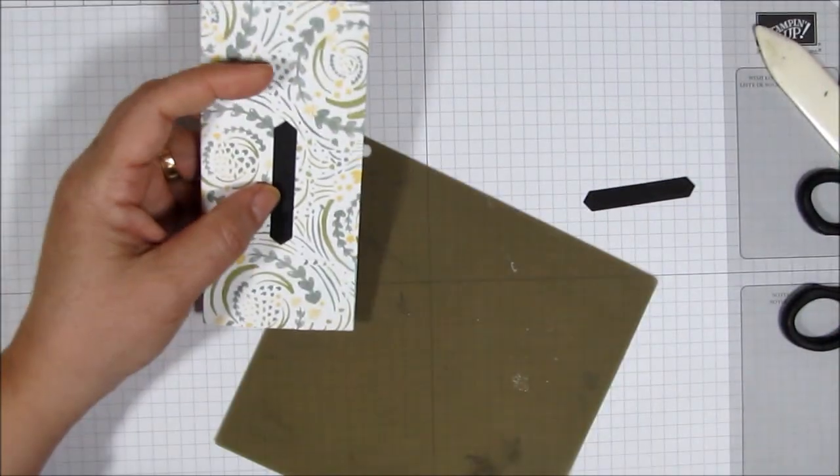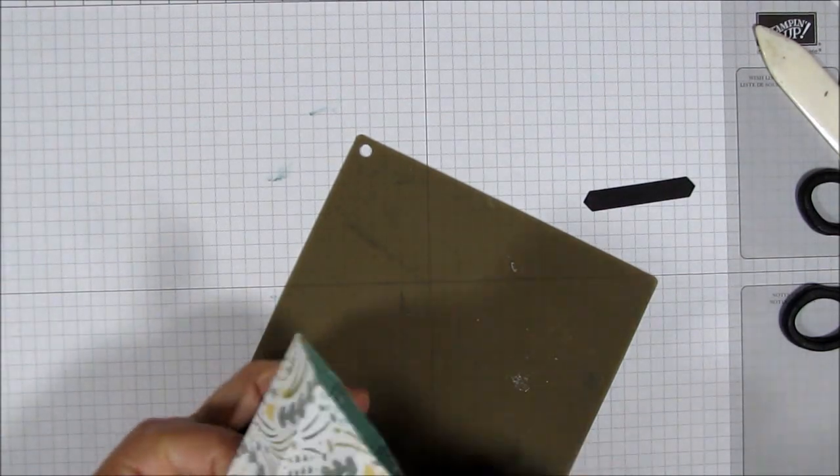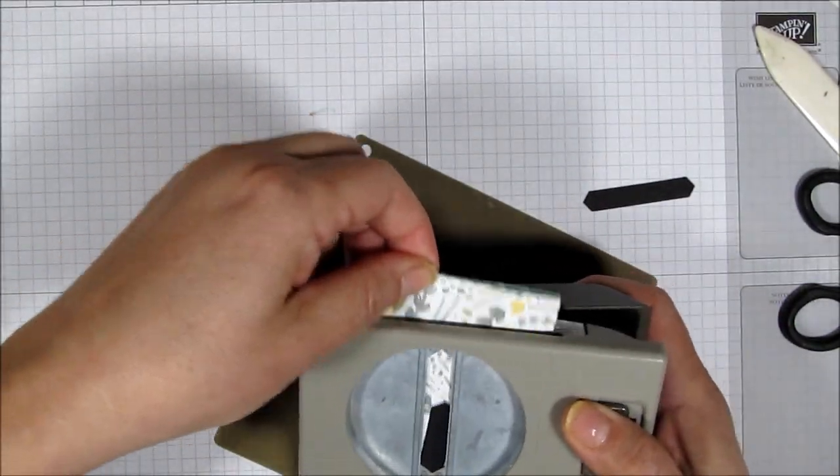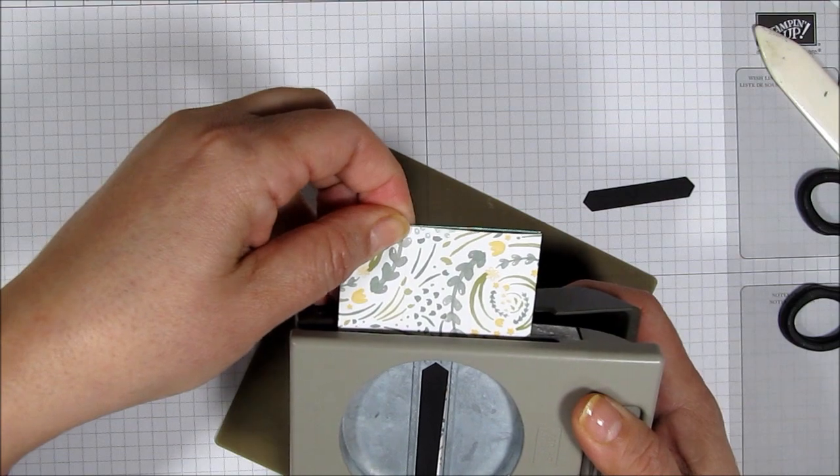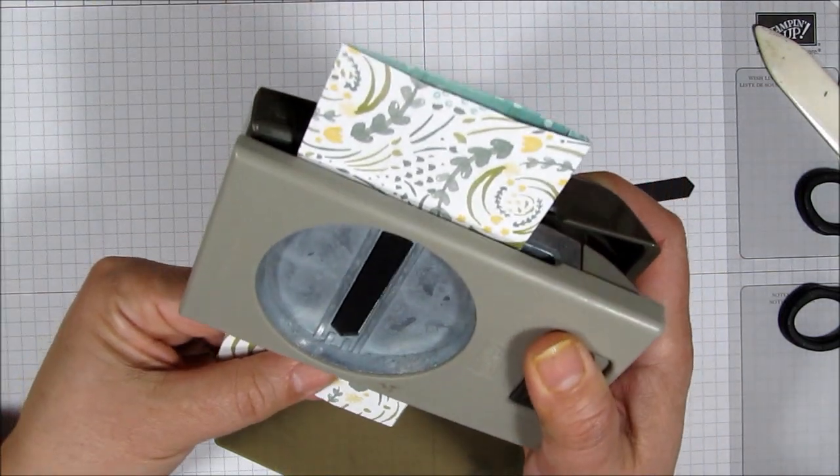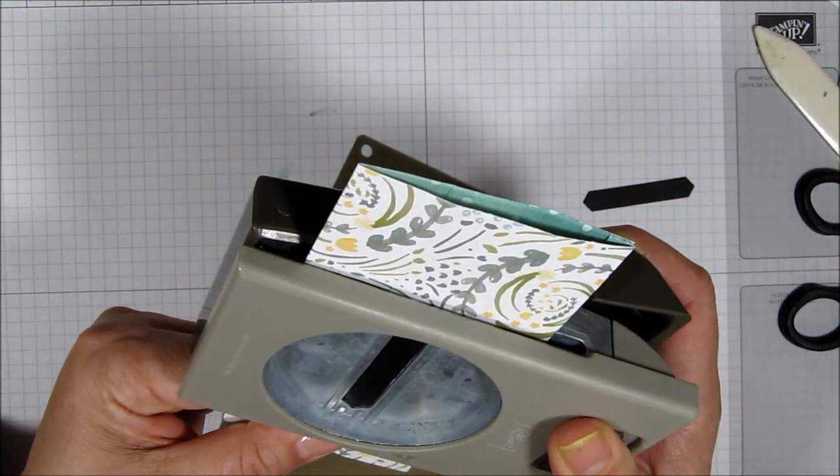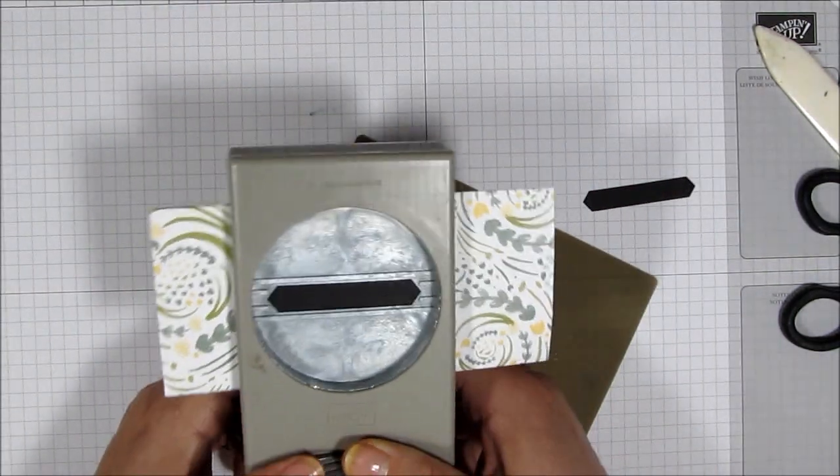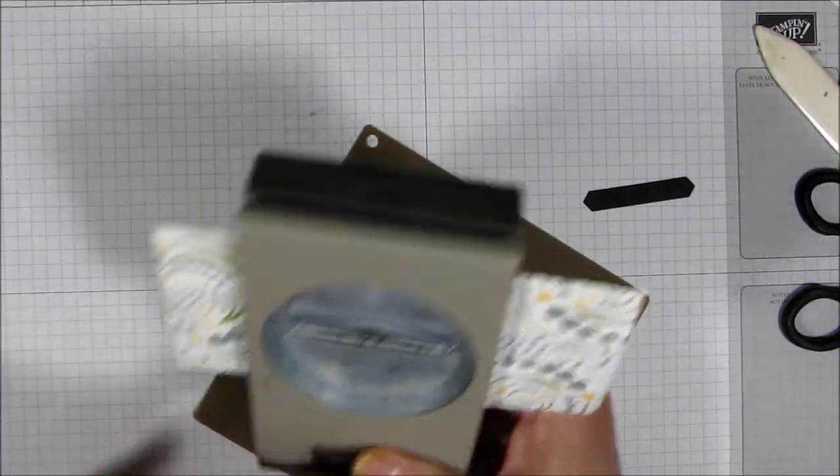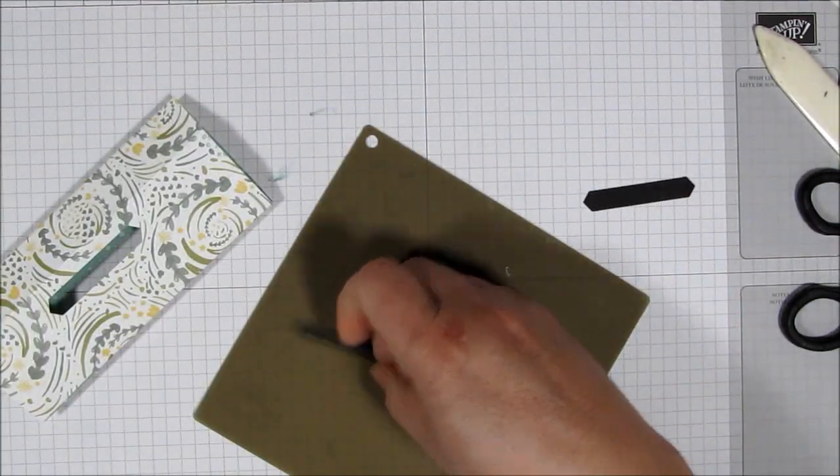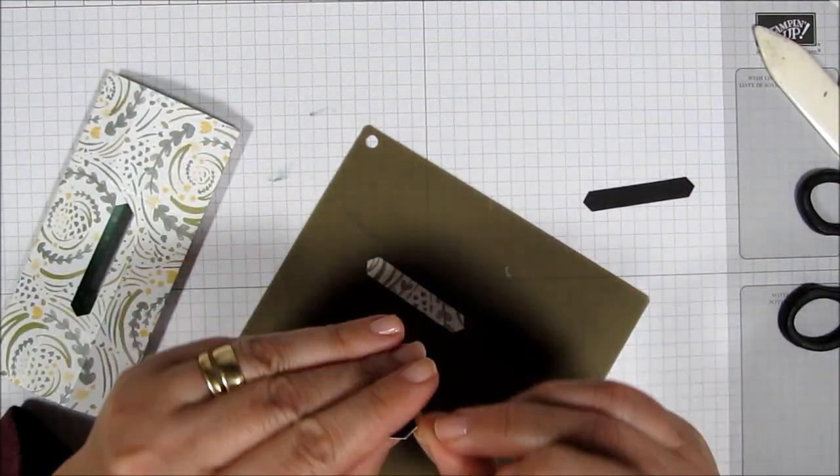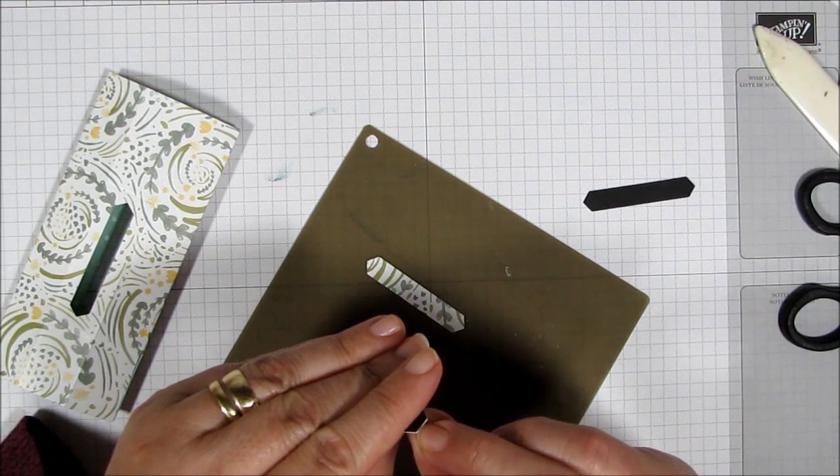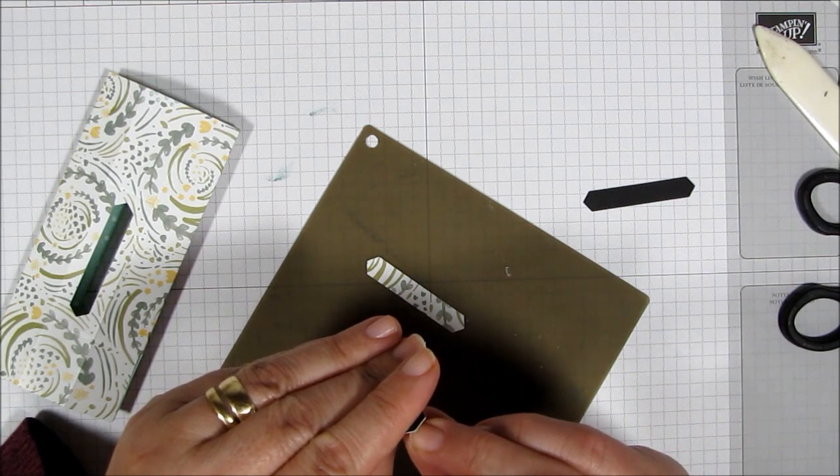I'm going to grab my punch and I'm going to line this punch up. Now take your time and make sure you've got this lined up really good so that you're not punching your template. There we go. That's one. And you're going to need to, of course, do this three times because each time you're cutting out two windows doing it this way.